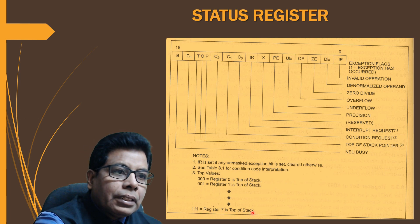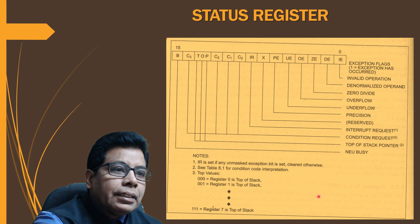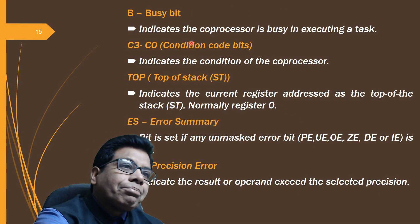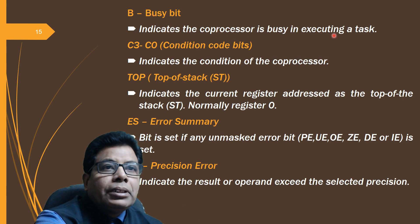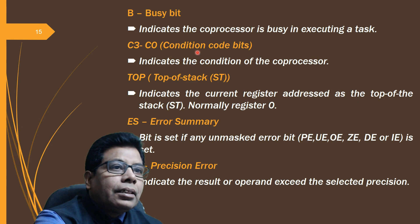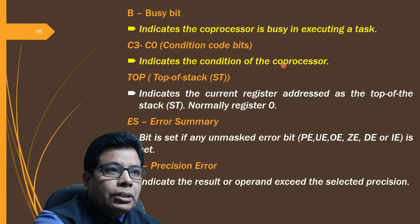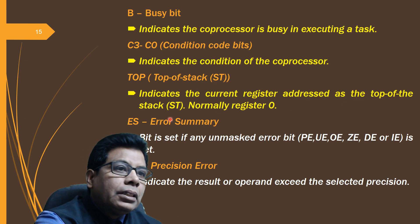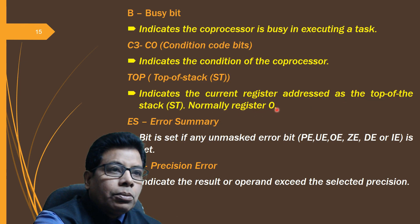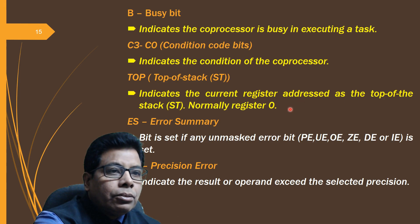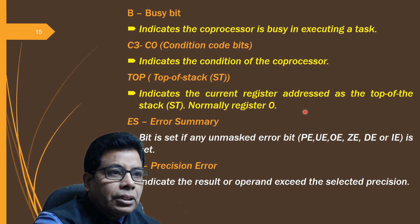The busy bit indicates the co-processor is busy executing a task. The conditional code bits indicate the condition of the processor. The TOP field indicates the current register address at the top of the stack — normally register 0 is the top of the stack, so these bits are 000. If set to 111, register 7 becomes the top of the stack. ES is the error summary bit, set if any unmasked error bit is set.